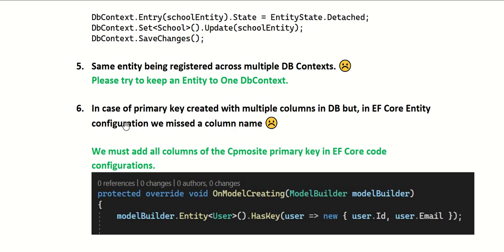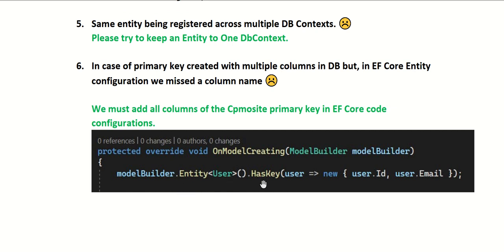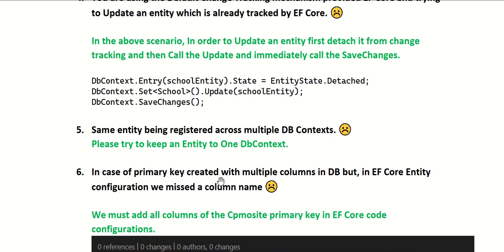Another scenario is a composite primary key where you are using multiple column names to construct a primary key in the database, but in EF Core configuration you forgot to mention one or multiple columns. This will cause the exception. You must add all columns of the composite primary key in EF Core code configuration. For example: modelBuilder.Entity<User>().HasKey(u => new { u.Id, u.EmailId }) - specifying both columns used as the primary key.